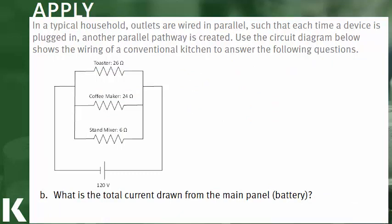Part B asks us what is the total current drawn from the main panel, which here is our battery. Note that a typical voltage in a house is around 120 volts, which is why we have 120 volts for our battery. We know voltage equals total current times total resistance, so rearranging, current equals voltage over resistance: 120 volts divided by 12.5 ohms gives us 9.6 amps.